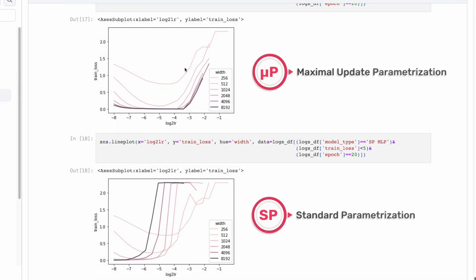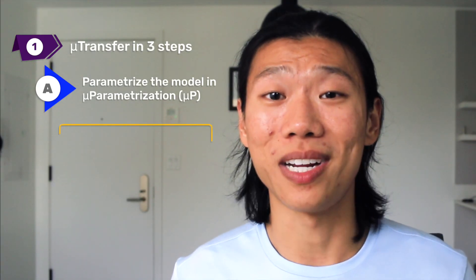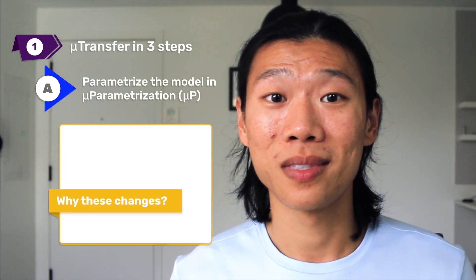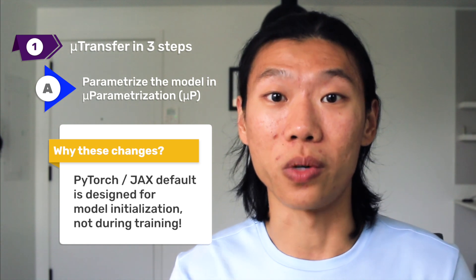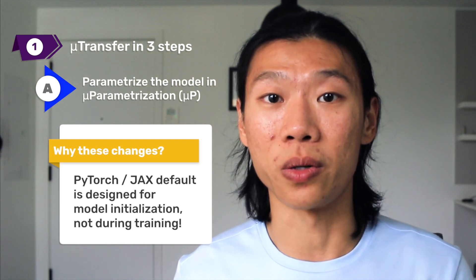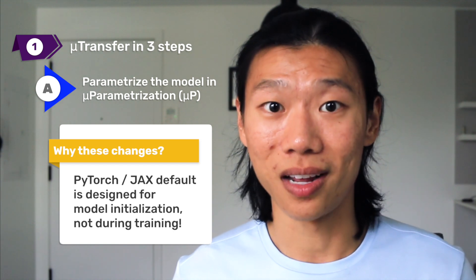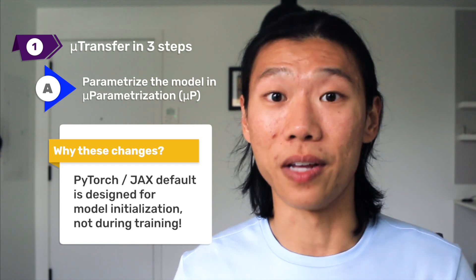In this plot, the x-axis is the learning rate, and different curves represent different widths. I recommend following this notebook, which I've linked in the video description. Now you might be wondering why these changes. The default scaling in PyTorch and JAX is designed for stability during initialization, but not during training. We'll come back to this later in the video.